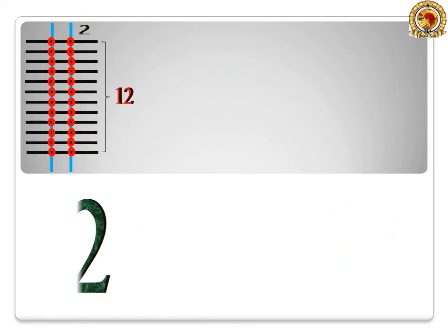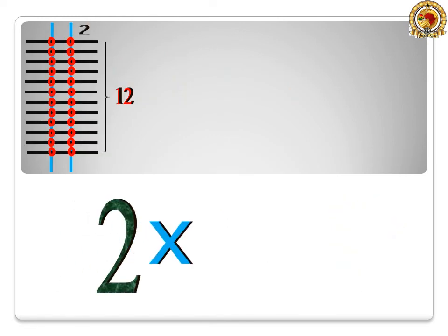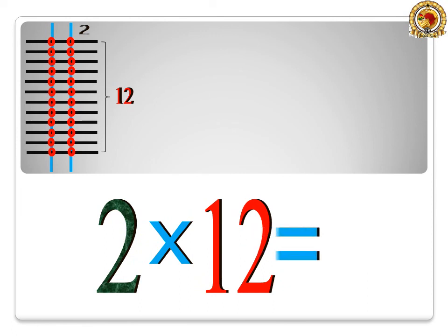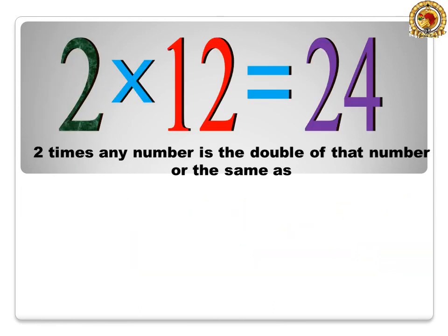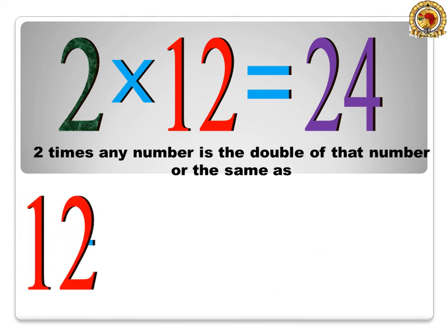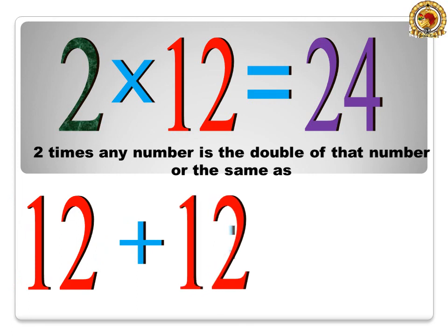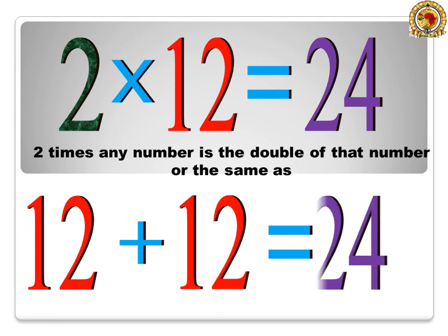2 times 12 is equal to 24. 2 times any number is the double of that number, or the same as 12 plus 12 is equal to 24.